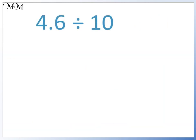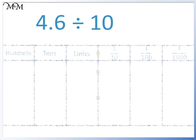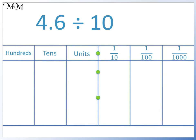4.6 divided by 10. This time we have a number that is already a decimal. The same rule applies. We write 4.6 on our place value grid and to divide by 10, we move each digit one place to the right, one digit at a time. We move the 4 from the units column to the tenths column. Next, we move the 6 from the tenths column to the hundredths column. Because we no longer have any digits in front of the decimal point, we write a zero in the units column. The number we have is 0.46. So 4.6 divided by 10 equals 0.46.